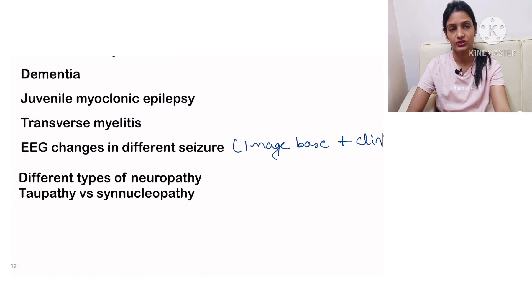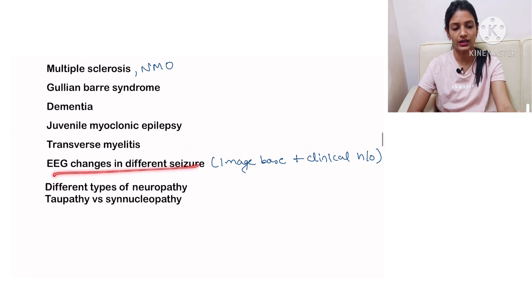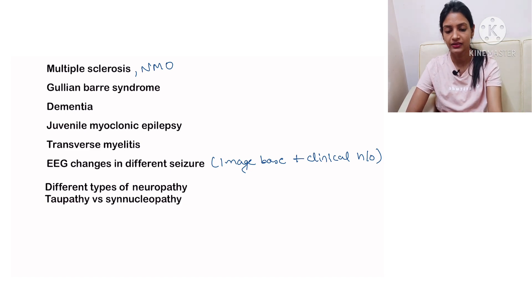Next is EEG changes in different seizures where you would be getting an image-based question. Then you would be given the clinical history and you have to make the diagnosis—whether they are talking about absence seizures or juvenile myoclonic epilepsy—or they can ask you the drug of choice for this. Then different types of neuropathy and tauopathy versus synucleinopathy.